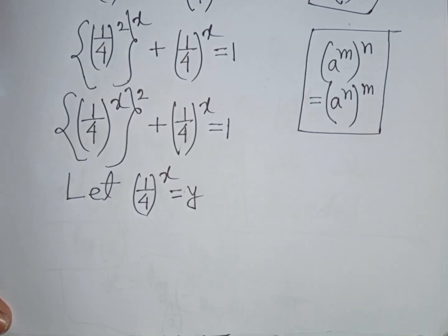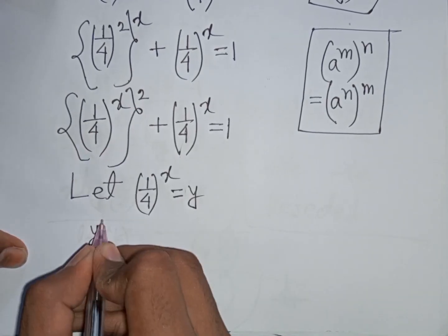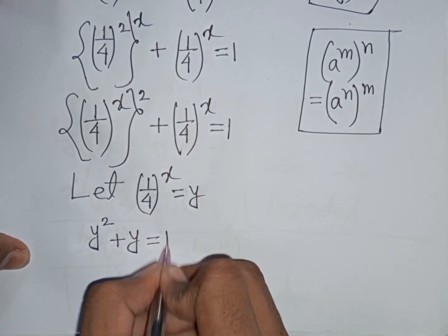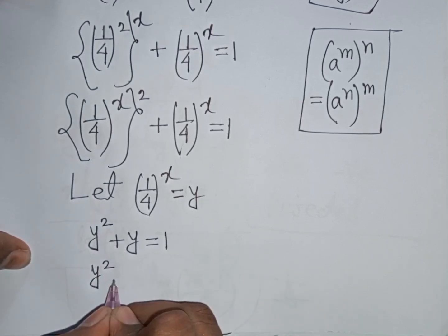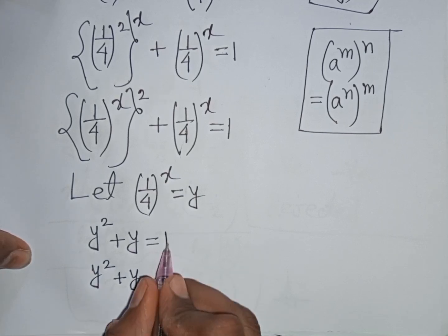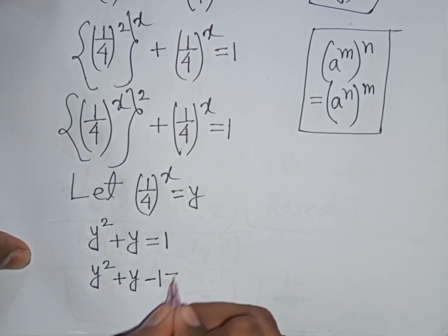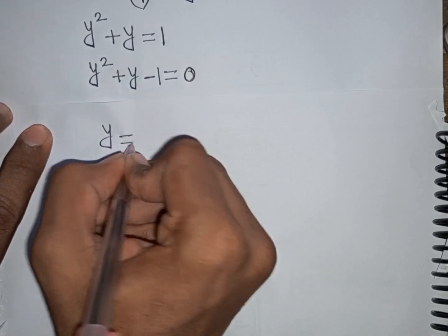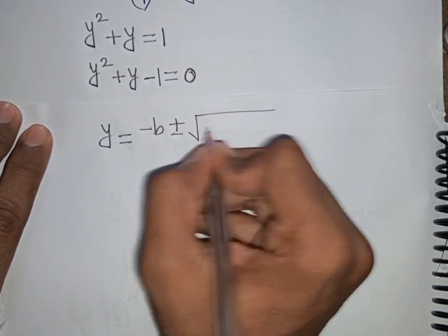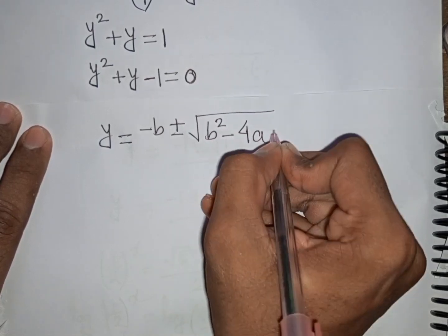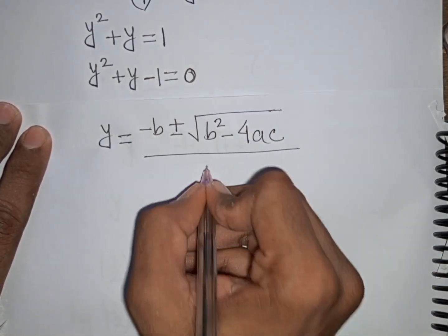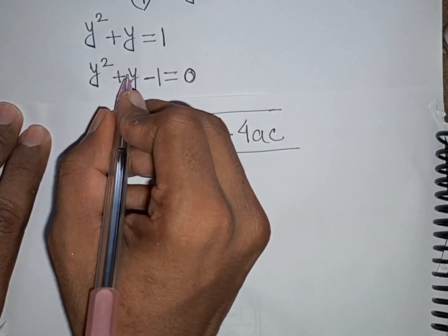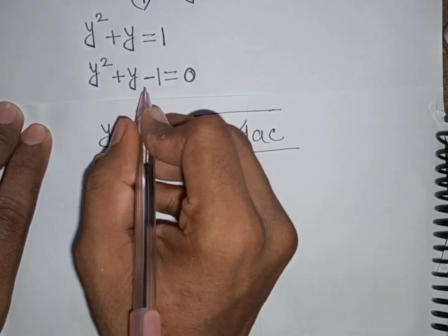Our equation becomes y² + y = 1. Moving 1 to the left side gives y² + y - 1 = 0. We can apply the quadratic formula here, where a = 1, b = 1, and c = -1.